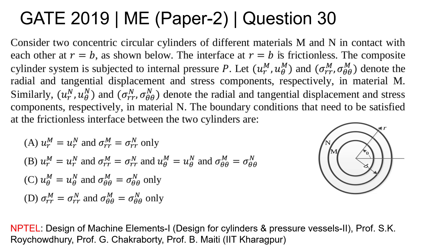You are given these variables, which are basically the radial and tangential displacement and stress for both M and N type materials. Now you have to find what boundary conditions need to be satisfied at the frictionless interface between the two cylinders.